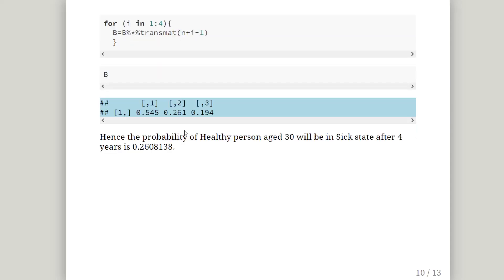So this is our for loop for i in 1 to 4. B gets updated each time by the transition matrix for that year. So when i is equal to 1, that will be transition matrix 30, and we multiply that by b.